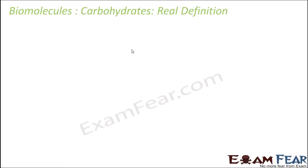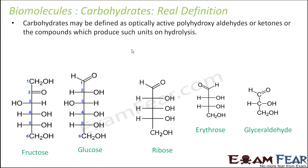So what is the real definition of carbohydrates? If we do not define them as hydrates of carbon, how should we ideally define them? In terms of chemistry — when we talk about structures, compounds, and chemical formulae — carbohydrates are defined as optically active polyhydroxy aldehydes or ketones, or compounds which produce such units on hydrolysis. It is quite a complex definition, and we will understand it word by word.